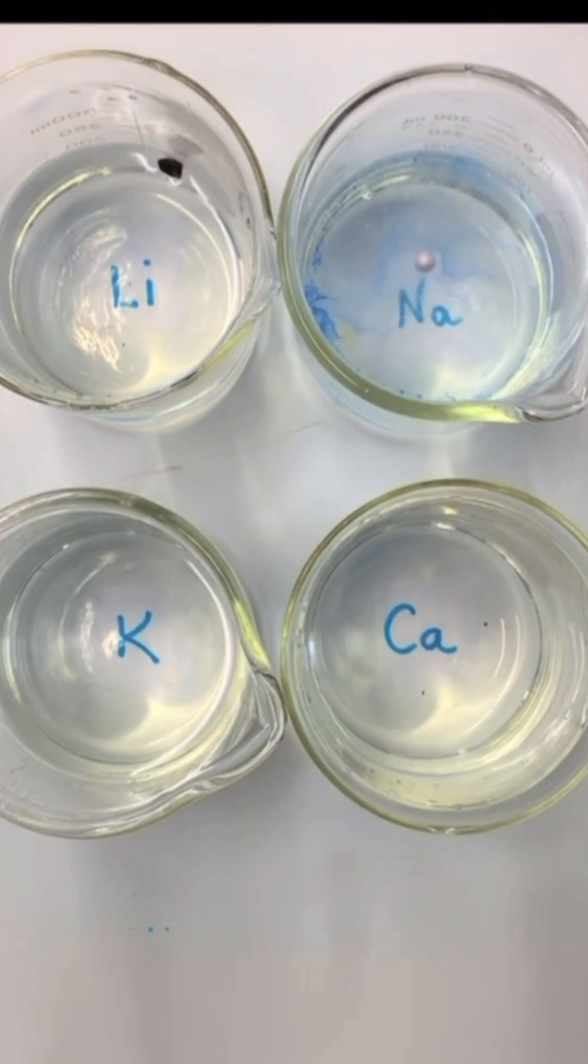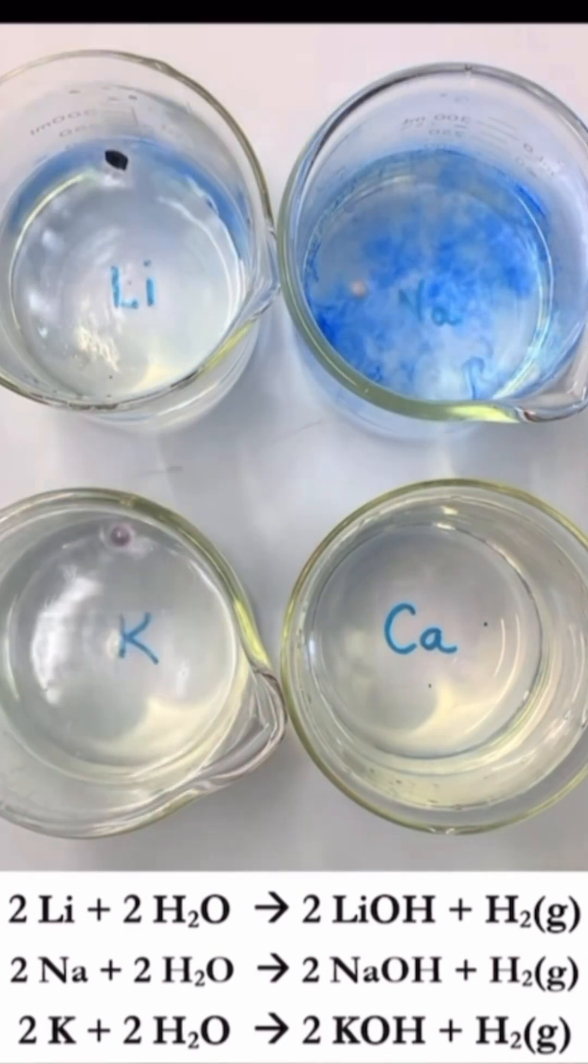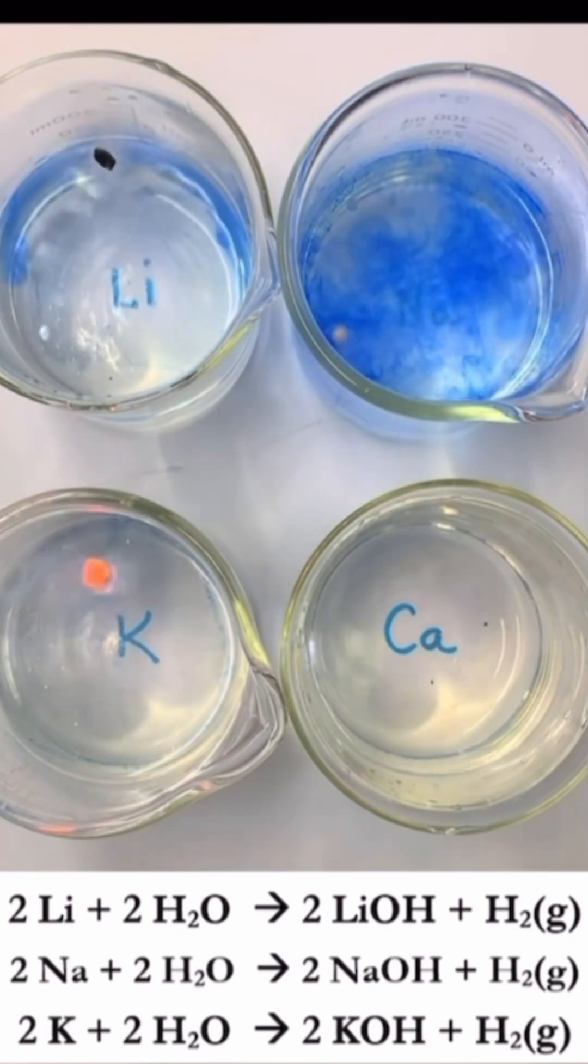Lithium. It reacts slowly, releasing hydrogen gas and turning the universal indicator blue. That's because it forms an alkaline solution, lithium hydroxide.